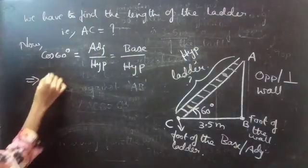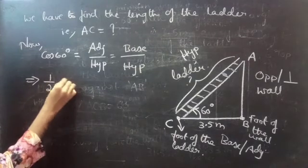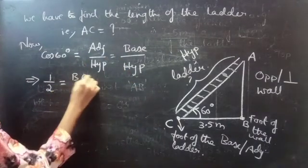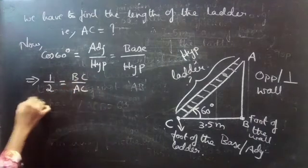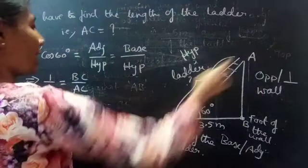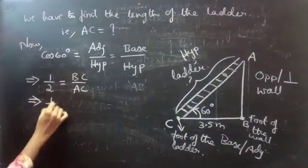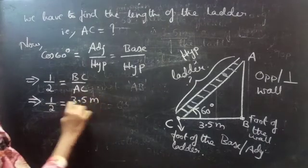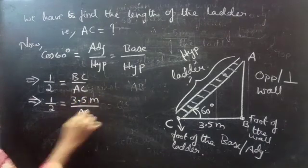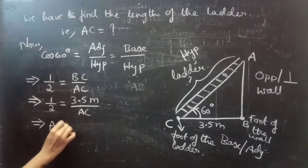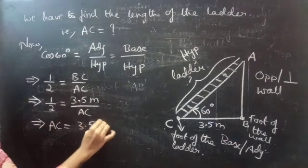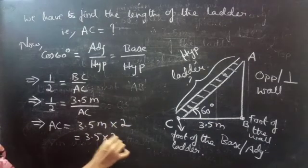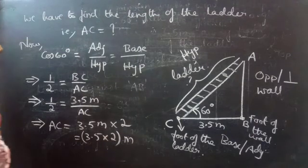So, cos(60°) equals 1/2, which equals base divided by hypotenuse — that is, BC divided by AC. This implies 1/2 equals BC over AC. We have the value of BC as 3.5 meters divided by AC.